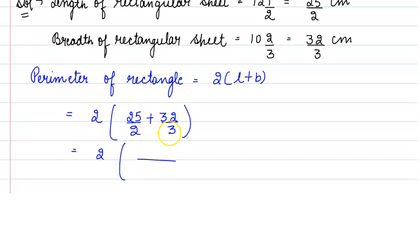To solve this, we need to add these fractions. First, we will find the LCM of 2 and 3. Since 2 and 3 are both prime numbers, the LCM is 2 × 3 = 6. So 6 ÷ 2 = 3, giving us 25 × 3. And 6 ÷ 3 = 2, giving us 32 × 2.